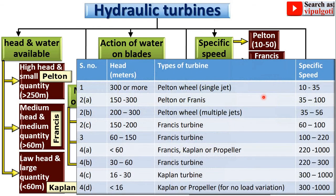For more details, you can see a chart here showing the head on one axis and the specific speed on the other, and according to that you can select the appropriate type of turbine.